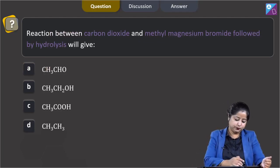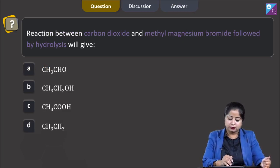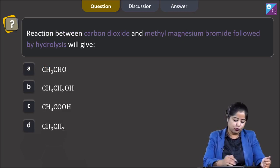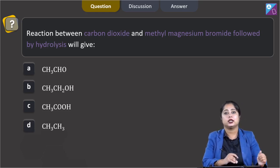Moving to the next question. Reaction between carbon dioxide and methyl magnesium bromide followed by hydrolysis will give CH3CHO (ethanal), CH3CH2OH (ethanol), CH3COOH (ethanoic acid), or CH3CH3 (ethane).